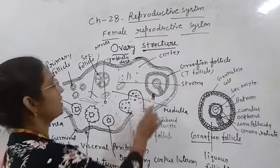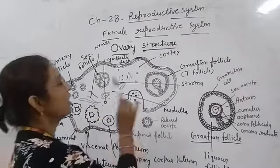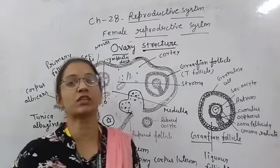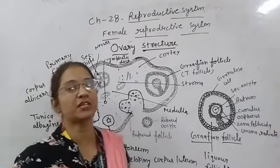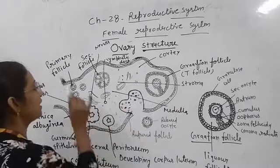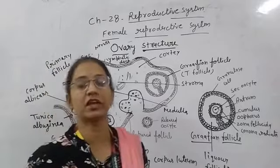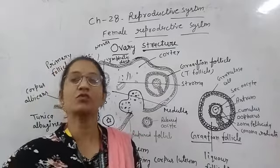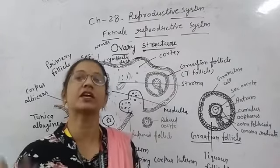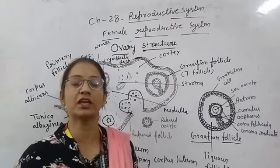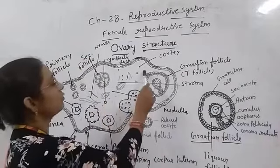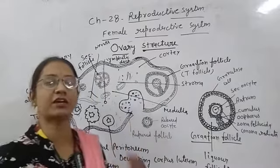The whole tissue of the ovary is known as stroma. It is further divided into two parts. The outer area is called the cortex. In the cortex there are developing follicles and interstitial cells. The outer area is a little denser where the follicles are found.